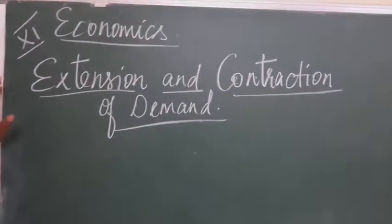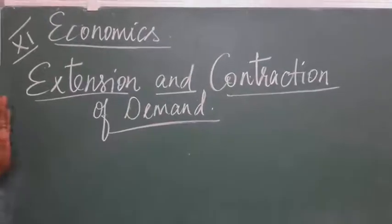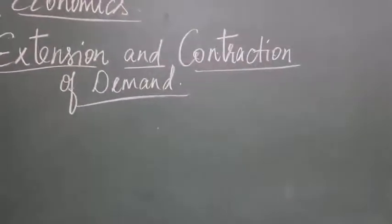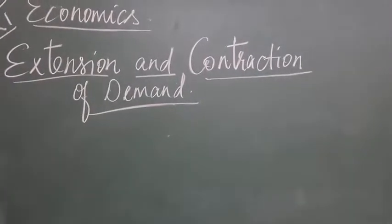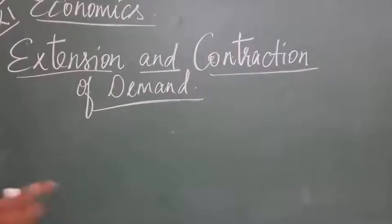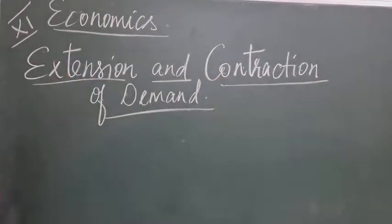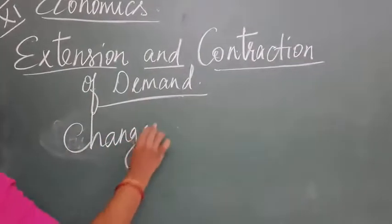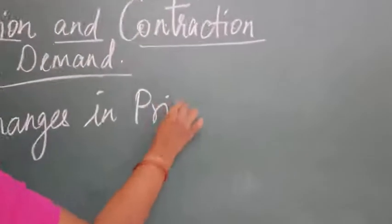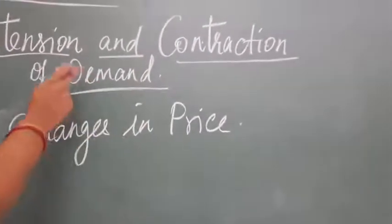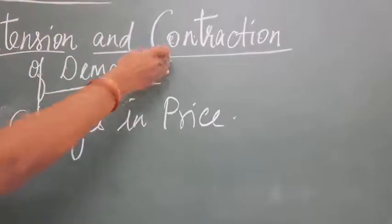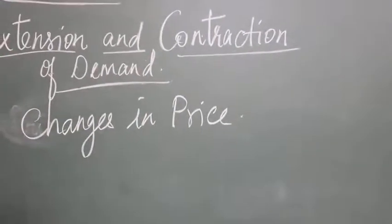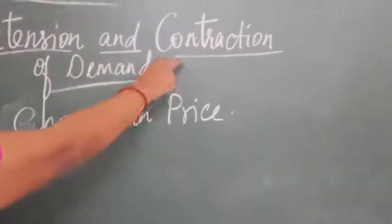Now we will see the extension and the contraction of demand. Extension means expanding, contraction means shrinking. The extension and contraction of demand is caused only due to changes in price. If the demand increases because of changes in price, it is called extension. If the demand decreases because of changes in price, it is called contraction.